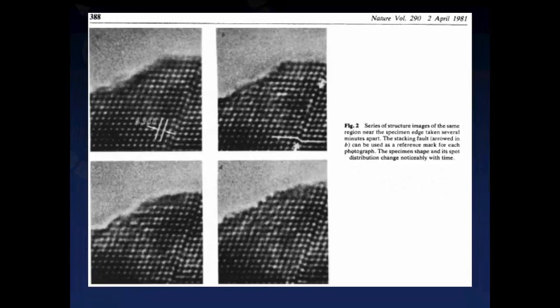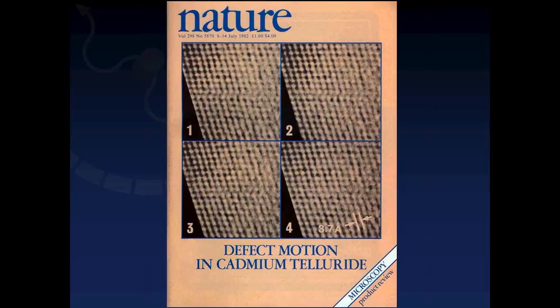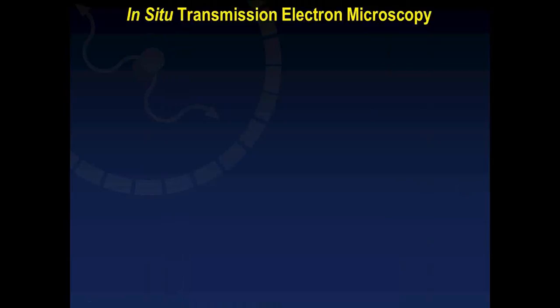Back then, the system did not have a video recording system, and they captured individual images as quickly as they could. The following year, the same experiments were repeated at Cambridge University, which had a medium-voltage electron microscope plus a real-time image-pickup video recording system. Using that system, they were able to capture a series of Shockley partial dislocations moving through an atomic plane of cadmium telluride in four consecutive frames.